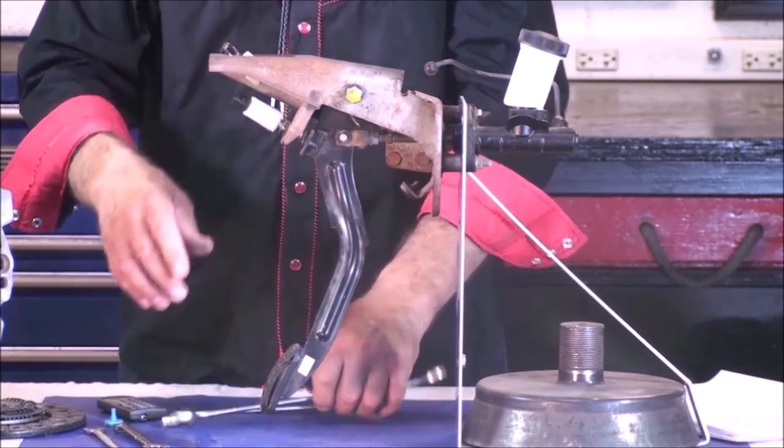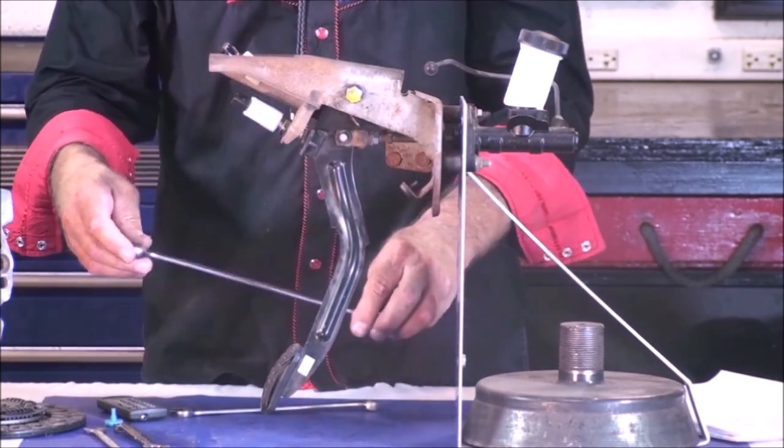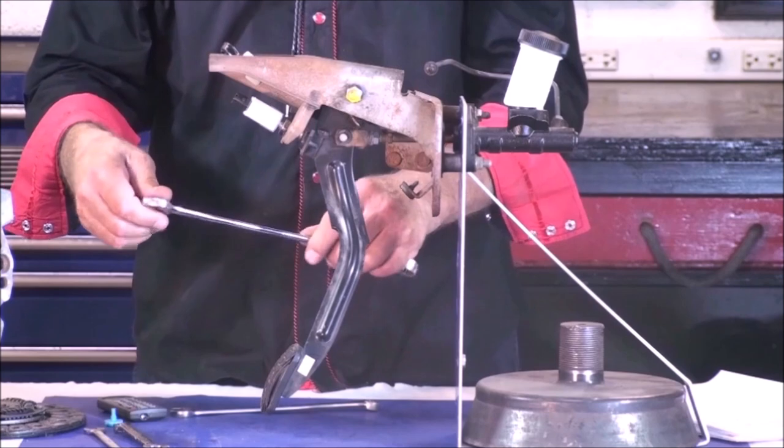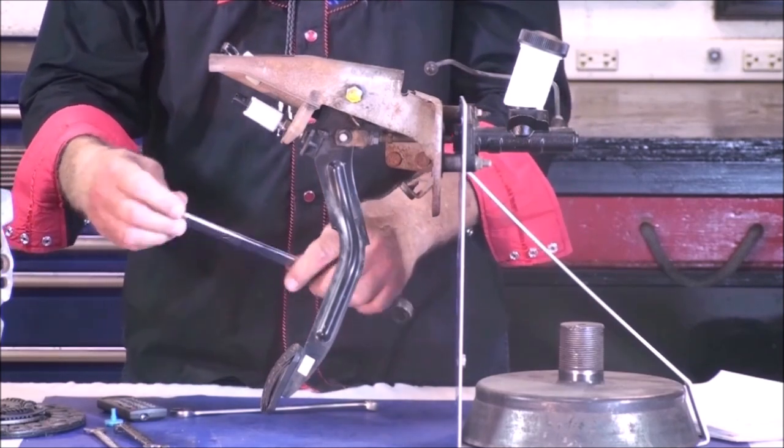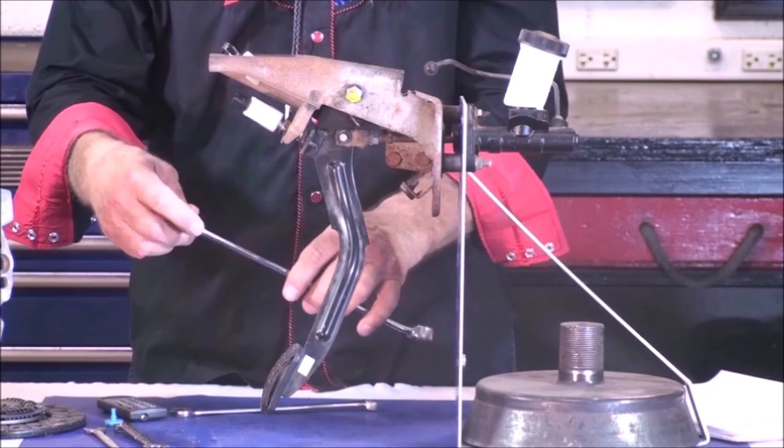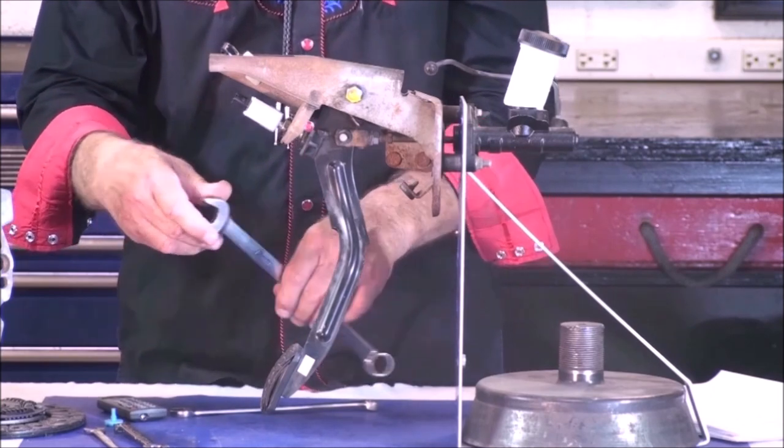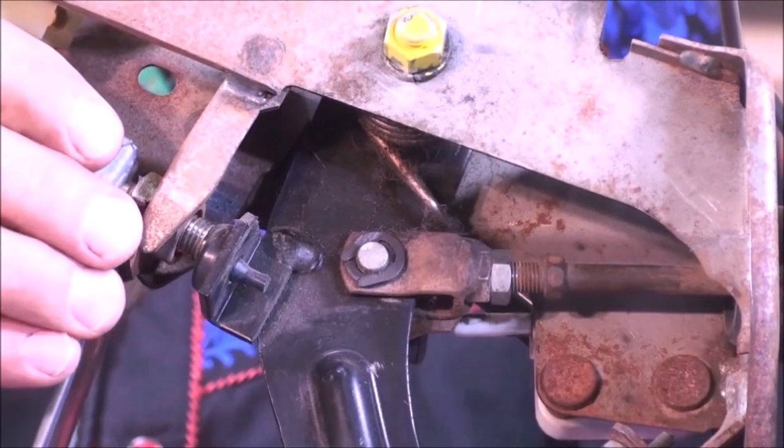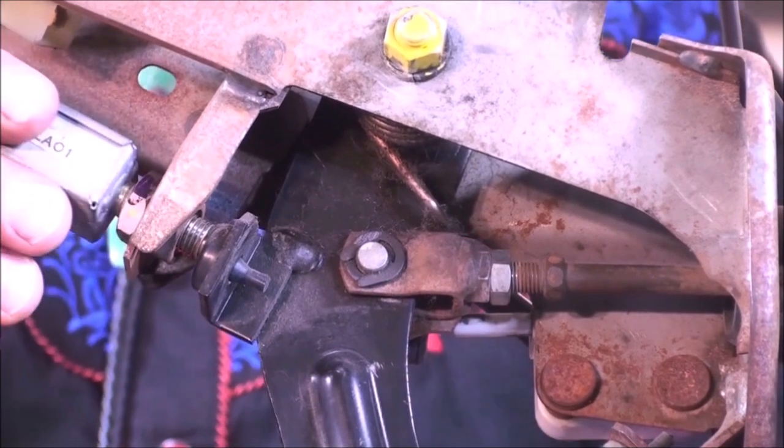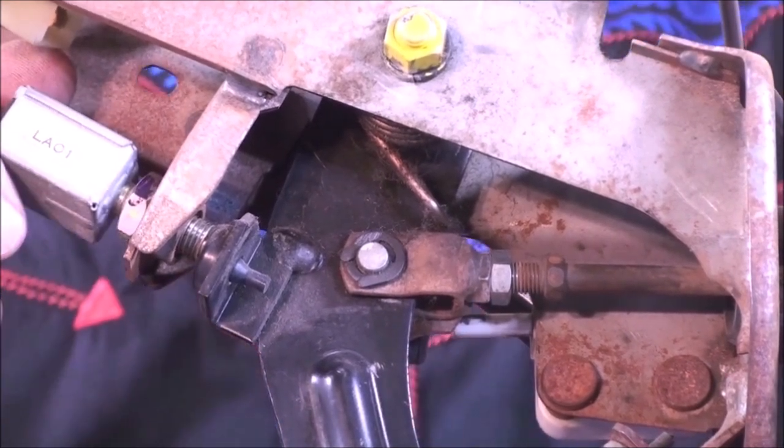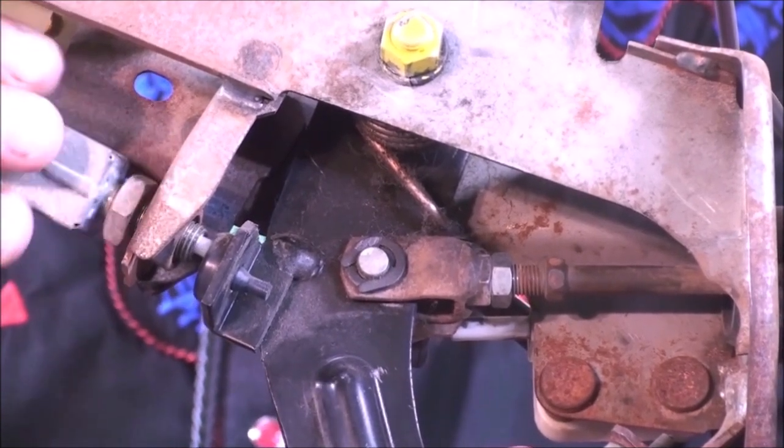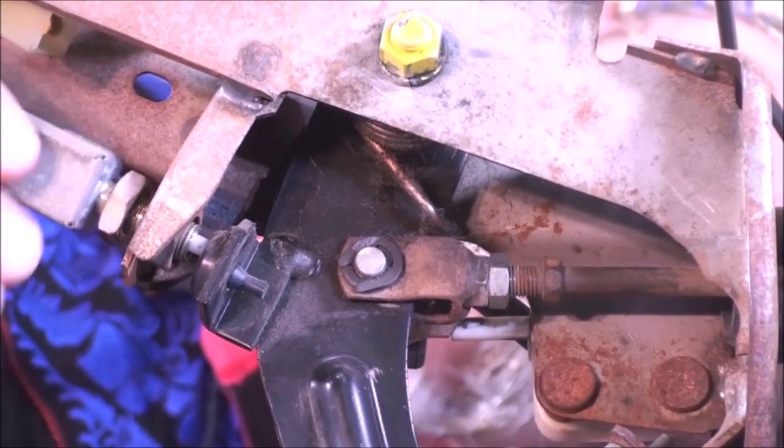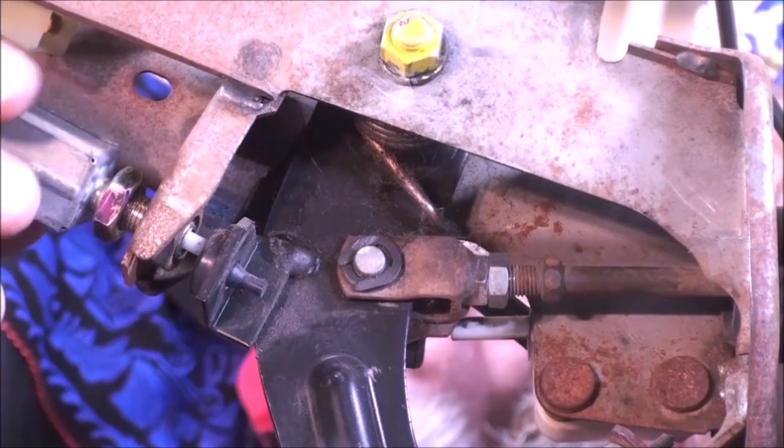To adjust the switch, we're going to use a long 17 millimeter wrench. When working under a dash, I like to use as long a wrench as I can because there's always a problem putting enough torque to break the bolts loose. I'm going to break that 17 loose, then hold the pedal and turn the switch until the threads become flush with the nut.